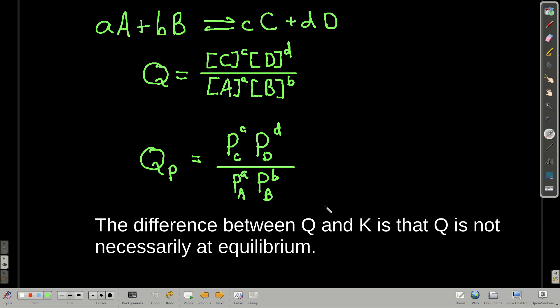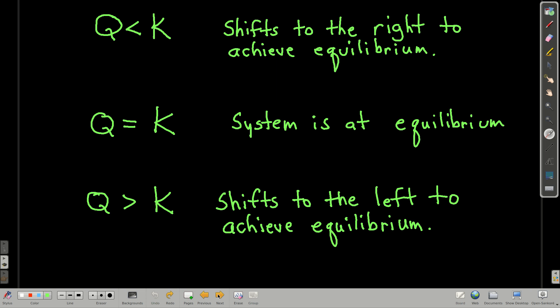The difference between Q and K is that for K, these have to be the equilibrium concentrations or the equilibrium partial pressures. Q, not necessarily so. You can have whatever the partial pressures or the concentrations are. What does that tell us? Well, it tells us something about which way the equilibrium is going to shift in order to achieve equilibrium.